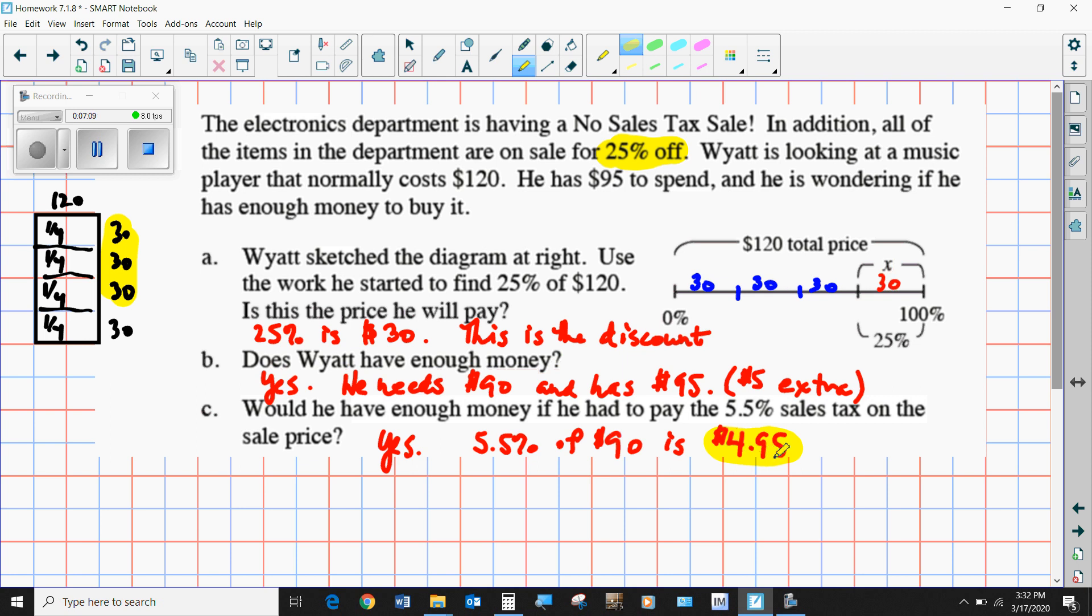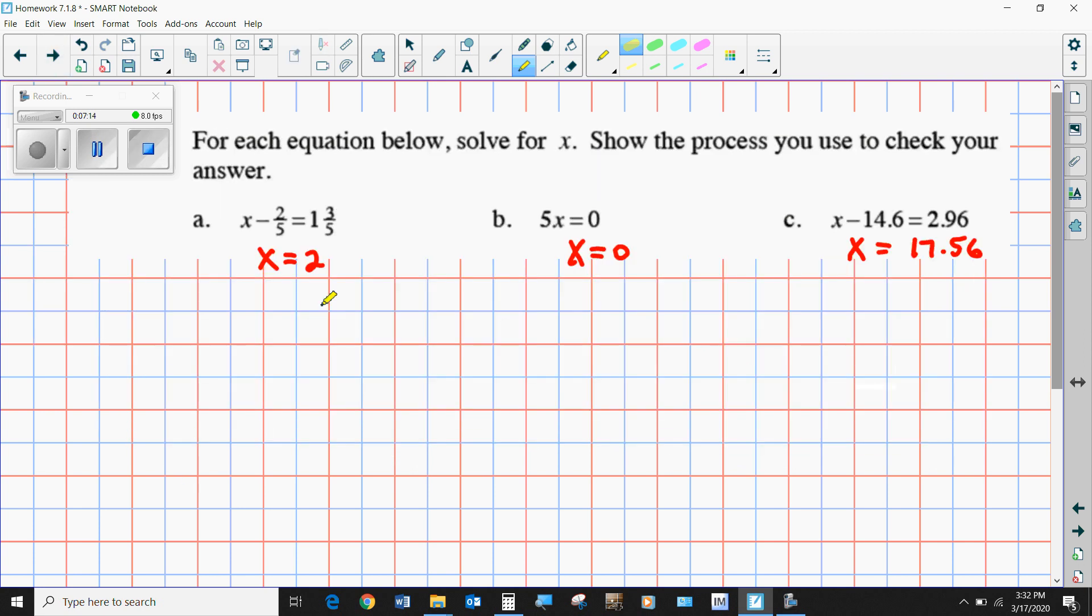Here we have some problems that we're going to solve. I'll just work through each one of them quickly. If we add two-fifths to each side here, x minus two-fifths plus one and three-fifths. When you add two-fifths to three-fifths, you get five-fifths, so one and five-fifths is going to be the same as two, so x has to be equal to two. Here you divide each side by five. What is zero divided by five? Well, it's zero. And here we're going to add 14.6 to each side.